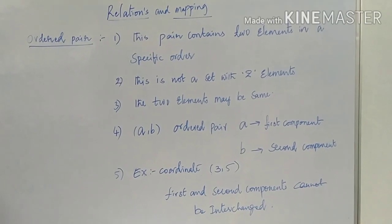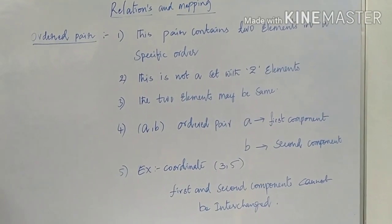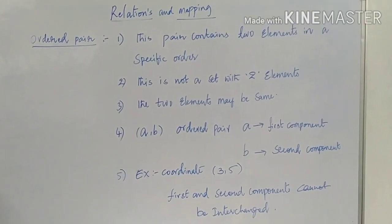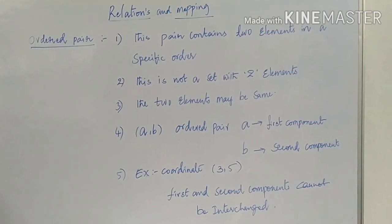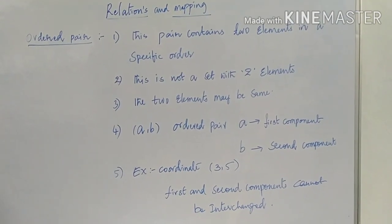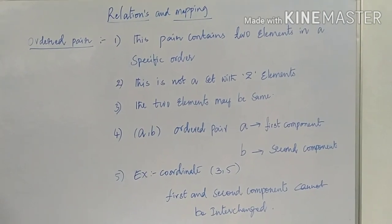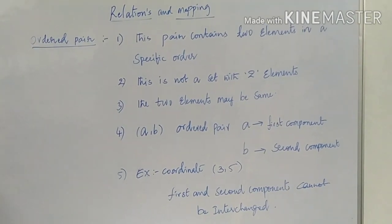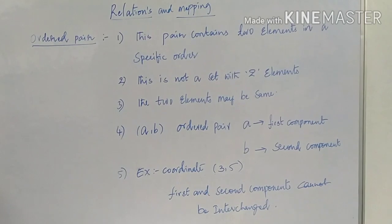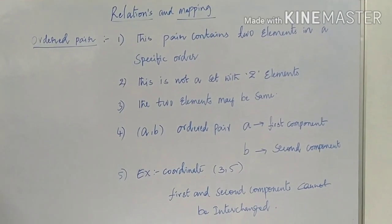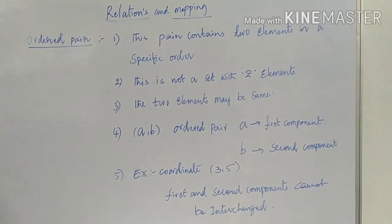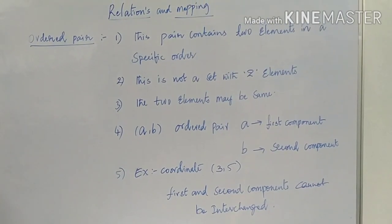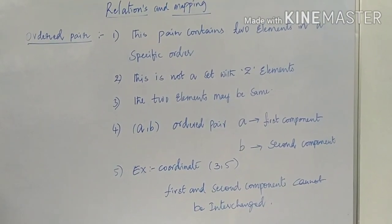Some important definitions in relations and mapping. First: ordered pair. This pair contains two elements in a specific order. An example is a coordinate equal to (3, 5). The first is called the first component and the second element is called the second component. They cannot be interchanged. This is not a set with two elements — the elements may be the same, for example (3,3) or (A,A). In an ordered pair (A, B), A is the first component and B is the second component.